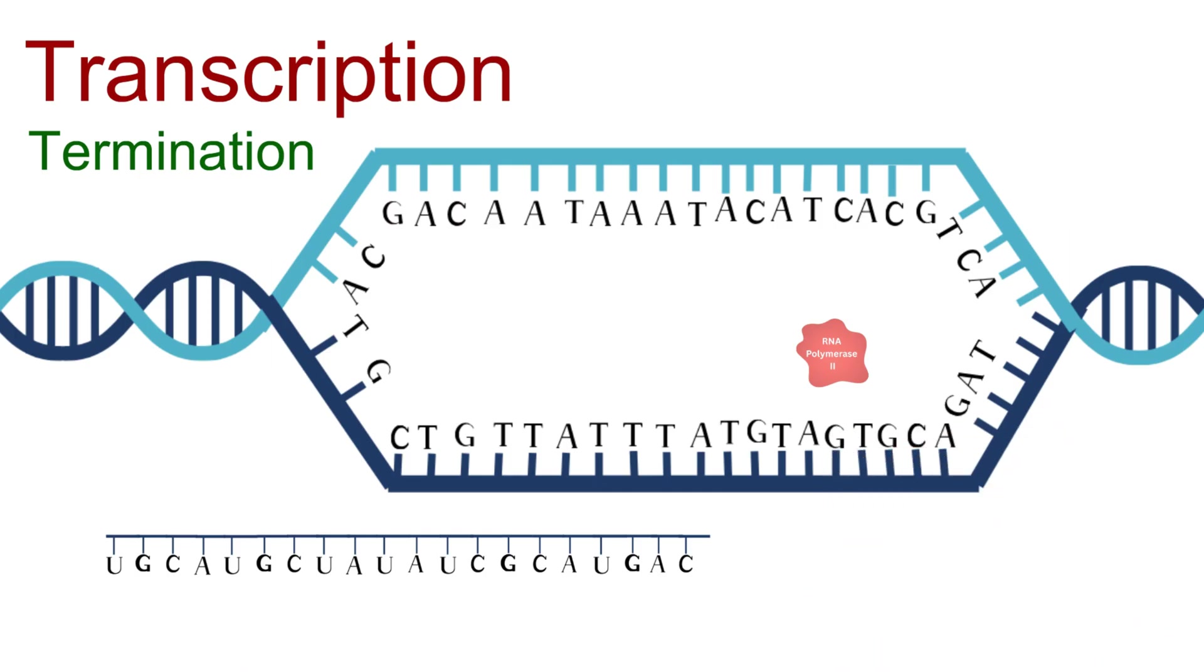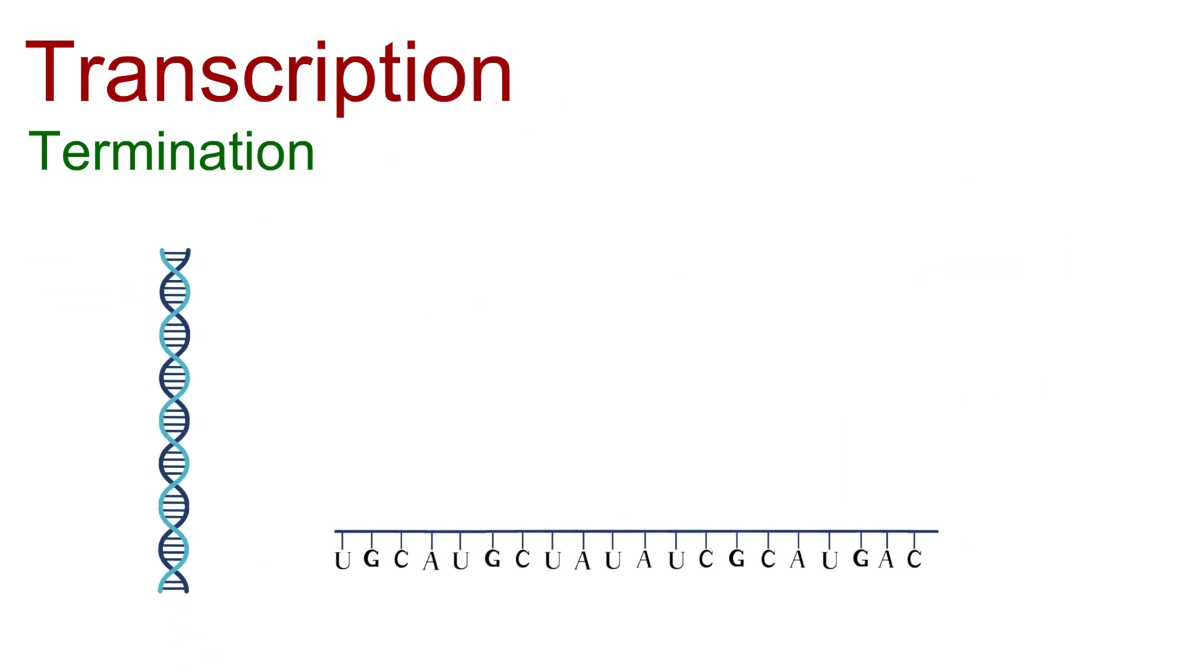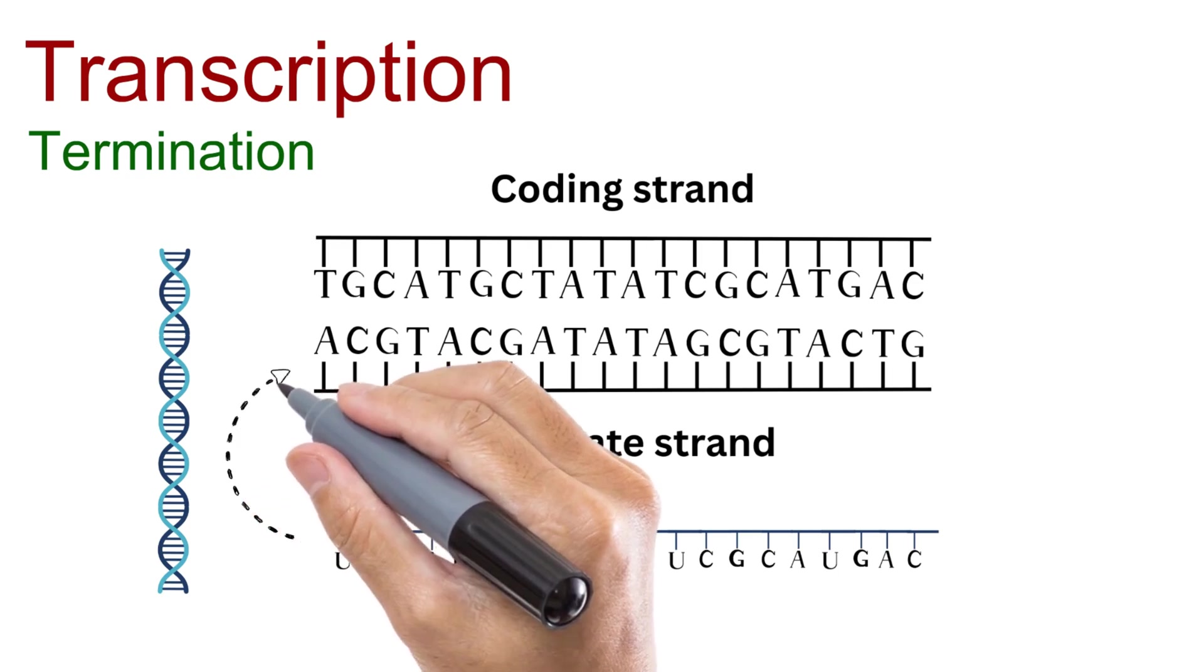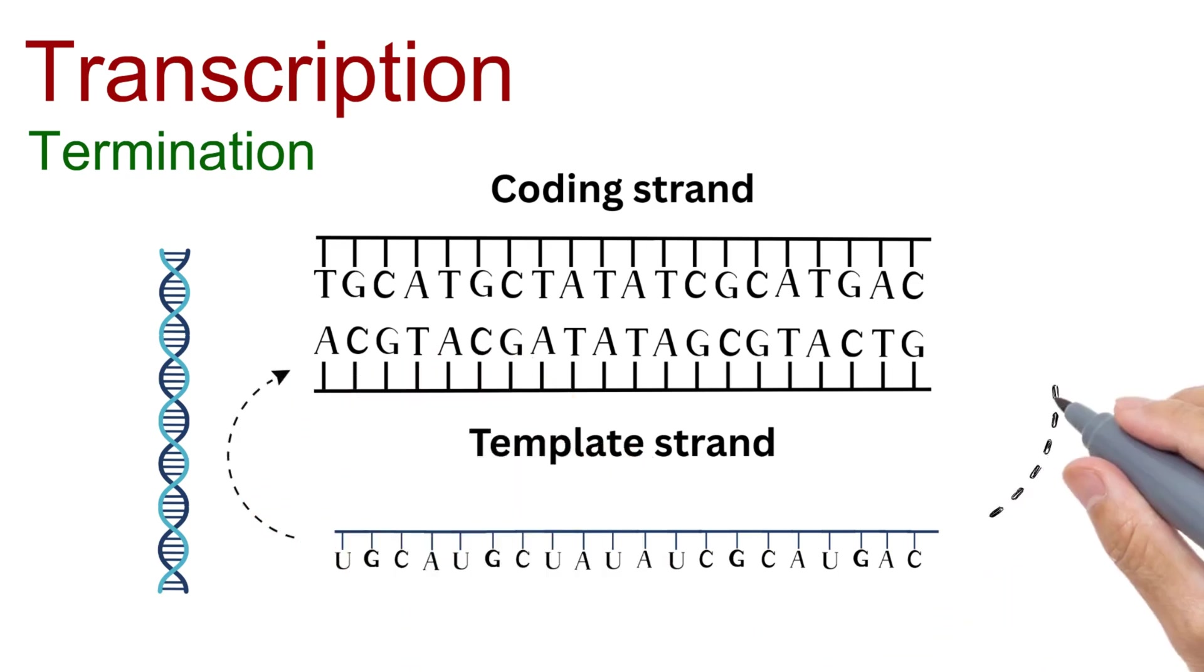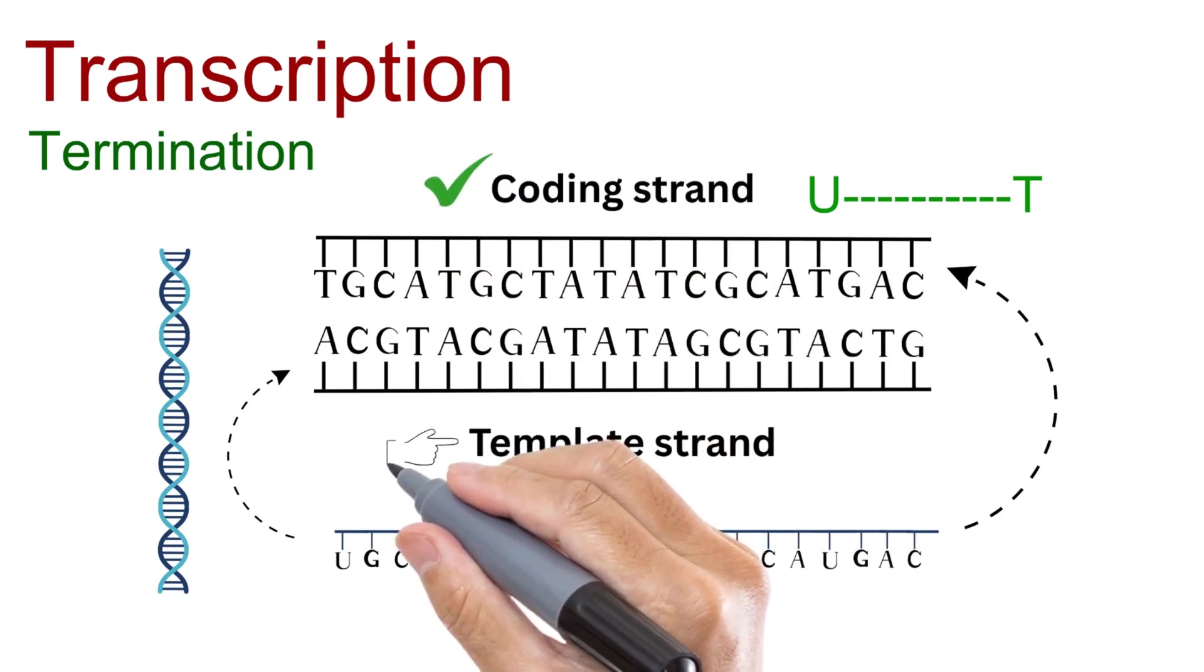Meanwhile, RNA polymerase 2 continues along the DNA for a short distance, producing extra RNA that has no real function. Eventually, it falls off the DNA, and the double helix snaps back into place. Remember we asked why RNA copies the template strand instead of the coding strand? Now you'll see: by copying the opposite strand, the RNA ends up with the same sequence as the coding strand, except with U instead of T. In other words, the coding strand represents the gene, but the template strand is what makes transcription possible.